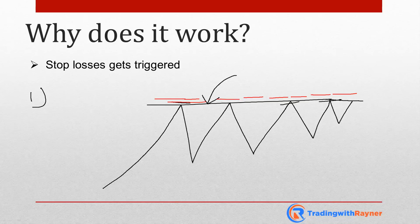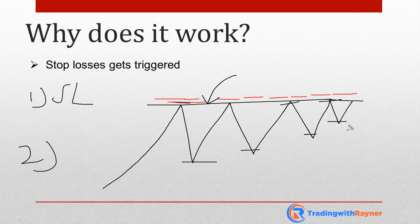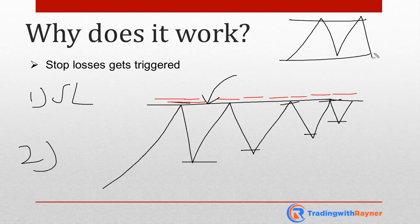When there is enough stop loss accumulated above resistance, there's a good chance the market will break out and trigger those stop losses to consume this liquidity. That's the first reason. The second reason is that it's a sign of strength. When you see the market making higher lows into resistance, it tells you the buyers are in control.